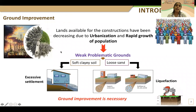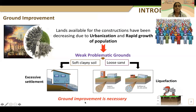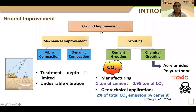Moving to the introduction — today, due to urbanization and the rapid growth of population, suitable land available for construction is decreasing. Because of that, people are using problematic ground for construction. When we use problematic ground, we need to improve the properties of that ground before construction. We call that process ground improvement. There are several drawbacks with the available conventional methods.